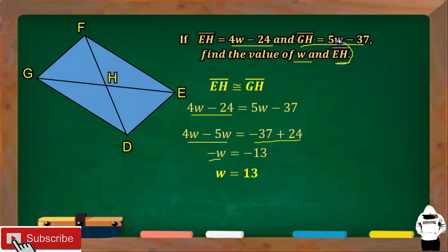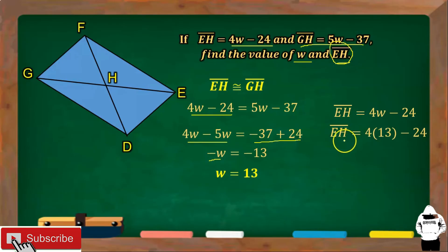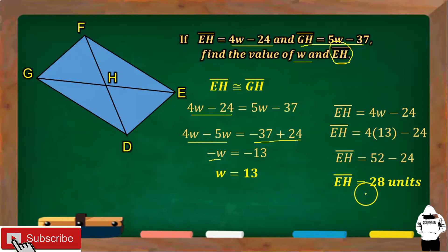Now we find segment EH. Since segment EH equals 4W minus 24, substitute W equals 13. We have segment EH equals 4 times 13 minus 24, which is 52 minus 24. EH is equal to 28 units.